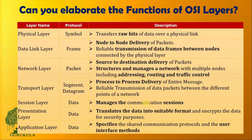Coming to the second layer, we have the data link layer, where we will be dealing with frames. The main functionality of the data link layer is node-to-node delivery of a packet, and it also takes responsibility for reliable transmission of data frames between the nodes connected by the physical layer.